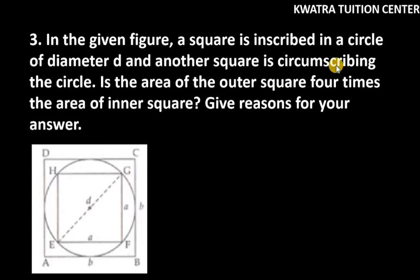And another square is circumscribing the circle. The area of the outer square is four times the area of inner square. This means that we have a relation between squares.